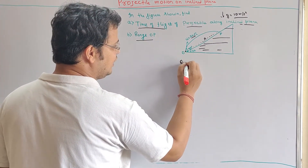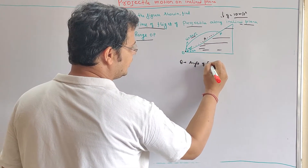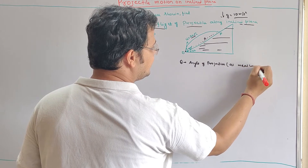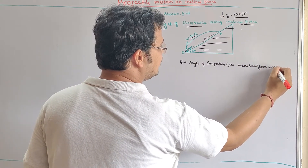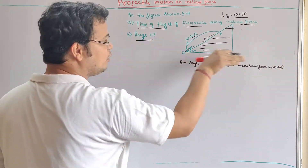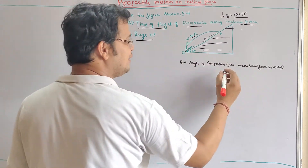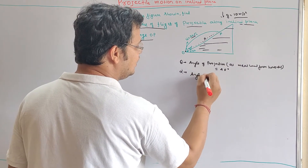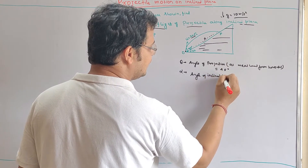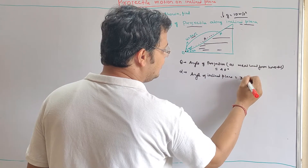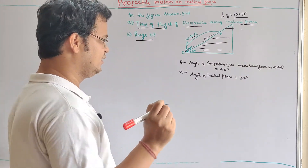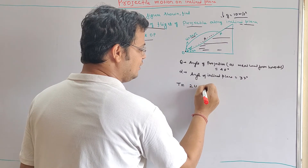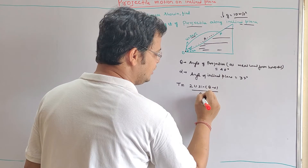Here, the angle of projection theta is measured from horizontal. The angle of the inclined plane is also needed. The formula for time of flight of a projectile along the inclined plane is: T is equal to 2u sine(theta minus alpha) divided by g cos(alpha).